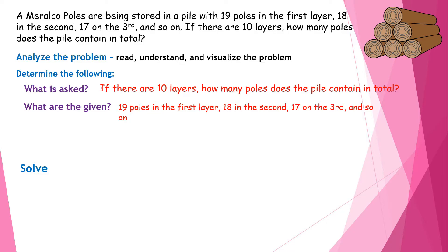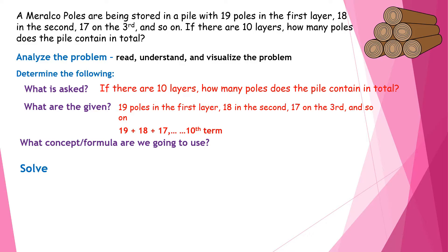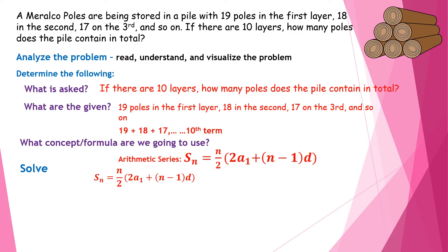Since we are looking for the total number of poles, we can write this as 19 plus 18 plus 17, up to the 10th term. Since we are adding the terms of an arithmetic sequence, we'll use arithmetic series with the formula s sub n equals n over 2 times quantity 2 a sub 1 plus n minus 1 times d, since we do not know the last term but we do know the number of terms.